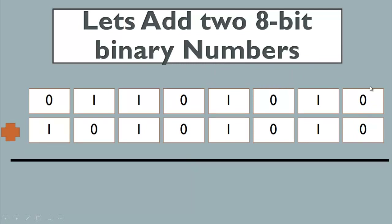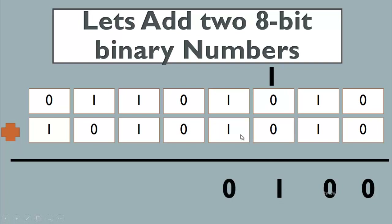Now let's add two eight-bit binary numbers, starting from the right side. Zero plus zero gives zero. One plus one gives two, and the binary of two gives us zero sum and one carry. Again, one plus zero gives one sum and carry zero. Then one plus one gives zero sum and one carry.